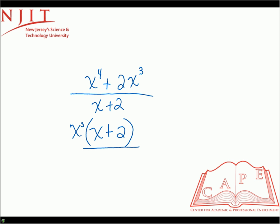Left over you have x plus two. Repeat what you have in the denominator, which is still x plus two. Here you have a common factor x plus two in the numerator and denominator and they will cancel each other out, so your final answer is x cubed. You were able to reduce a rational expression from highest power of four to highest power of three.